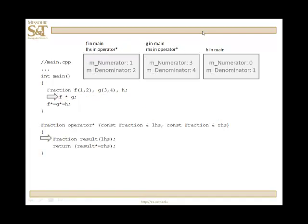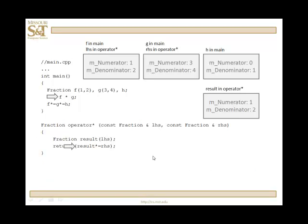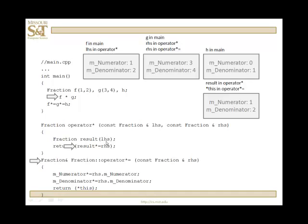In the very first line of code, we create a fraction local to the operator definition. We call it result, and we're going to call the copy constructor. The first thing is a call to the copy constructor, where result is the calling object. Left-hand side is what is going to be passed into source. We're going to copy source's numerator into the numerator of the calling object, and source's denominator into the denominator of the calling object. It completes that call, and so result has been created and initialized. Now I'm going to have result call the star equal operator and return that value, which means I'm going to return result after it has been changed.